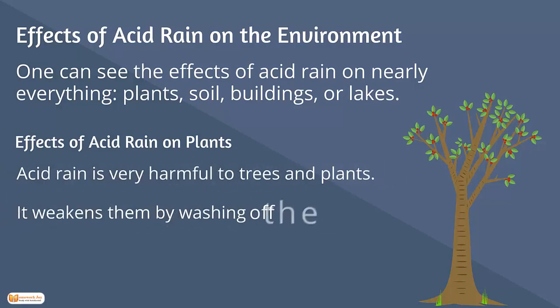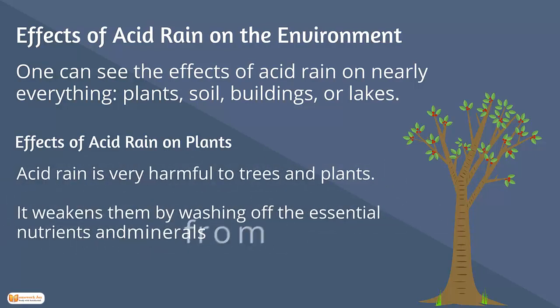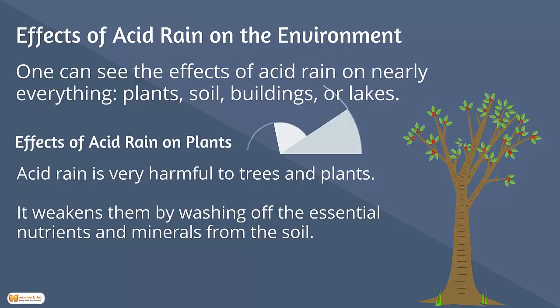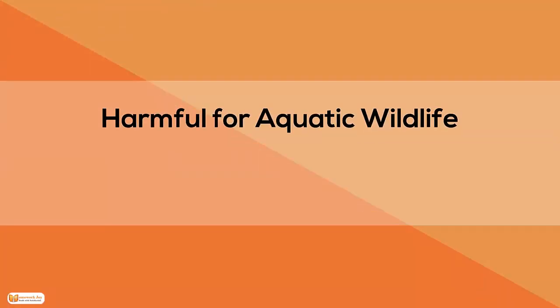Effects of acid rain on plants. Acid rain is very harmful to trees and plants. It weakens them by washing off the essential nutrients and minerals from the soil, and it wipes off the protective layer on leaves.